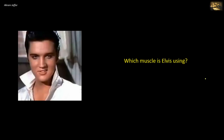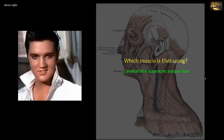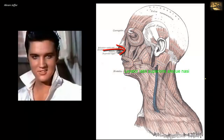Which muscle is Elvis using? This is the levator labii superioris alaeque nasi. It is one of the muscles of the dilator mechanism of the mouth, a muscle of facial expression supplied by the facial nerve. And as its name indicates, it is an elevator.